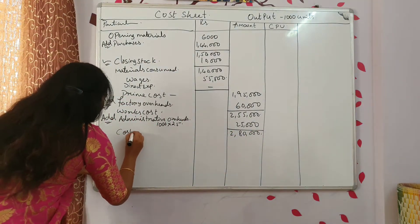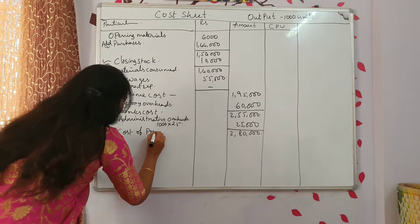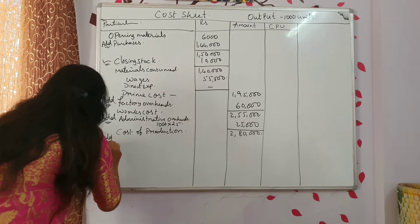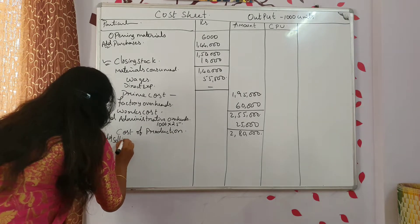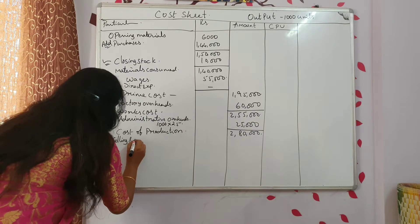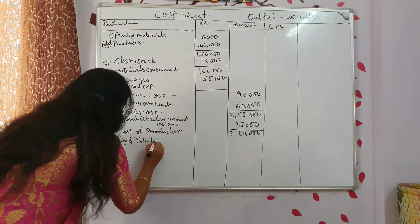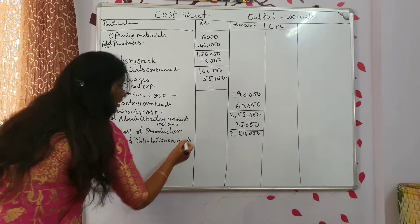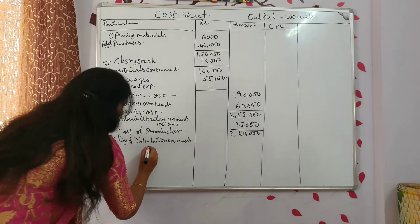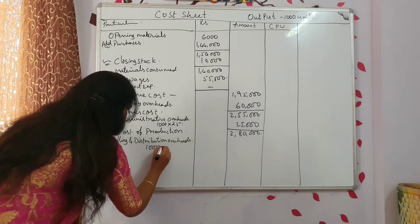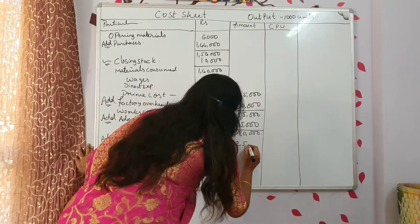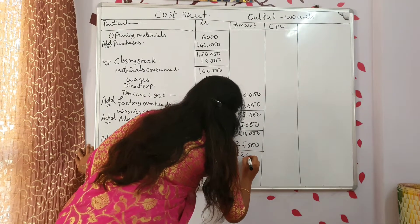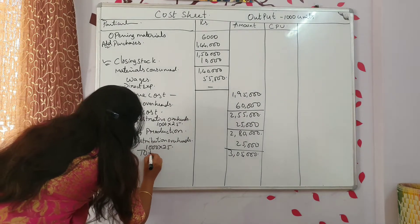This is called cost of production. To this add selling and distribution overheads. Selling and distribution also 25 rupees per unit. So 1000 into 25, you are getting 25,000. Then the total is 3,05,000. This is called total cost.